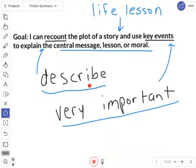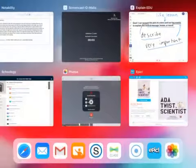We're going to be trying to tell the story as best as we can using key events, the most very important parts of the story. We're going to be using all that to explain what is the central message, lesson, or moral. I always think about that as the big life lesson—what are we supposed to take away for our own lives?